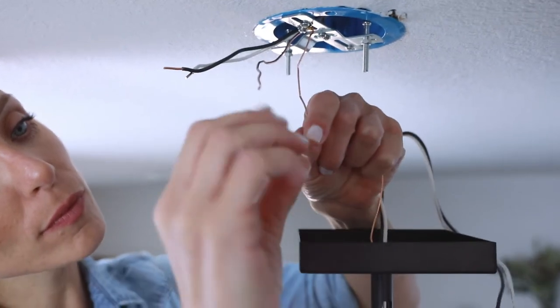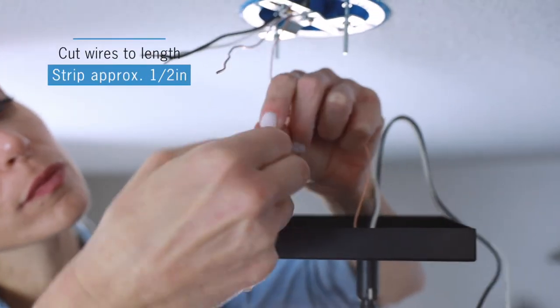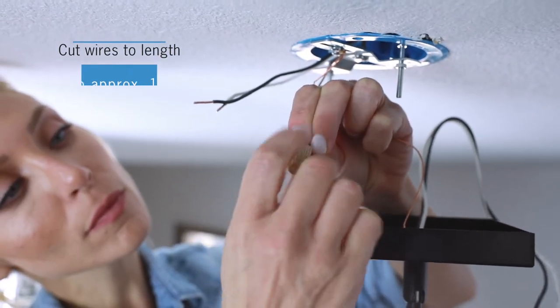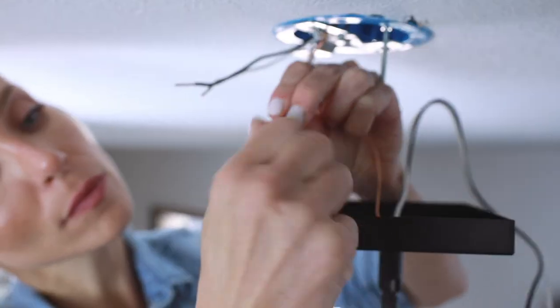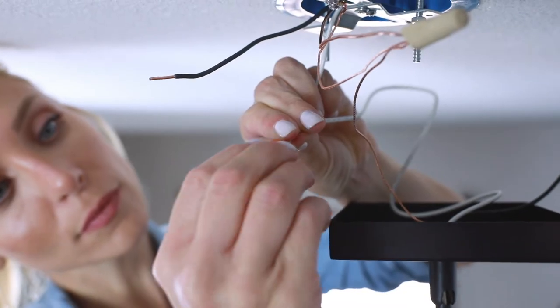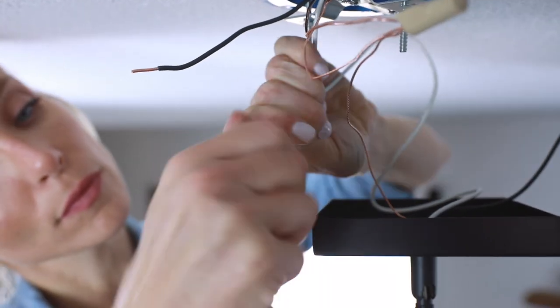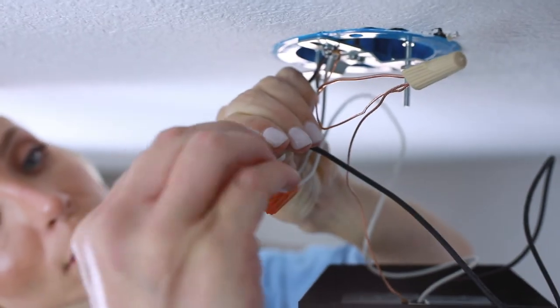Make all electrical connections. Cut wire to length, strip, and connect ground to ground, white to white, and black to black.